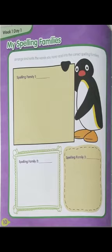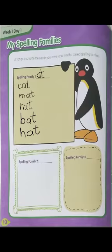In spelling family one, we are going to write the AT words. Do you remember the words ending with the AT sound? Yes — like cat, rat, mat, fat, sat. We will be writing only five words here from the AT spelling family. Write: cat, mat, rat, bat, hat.